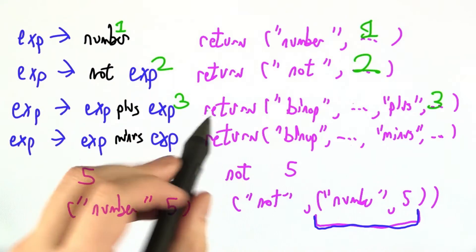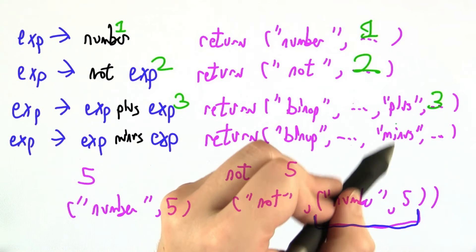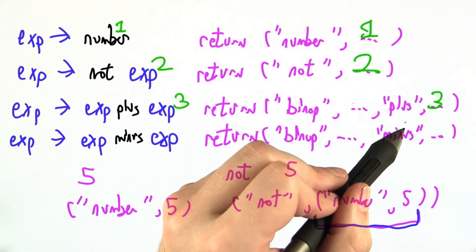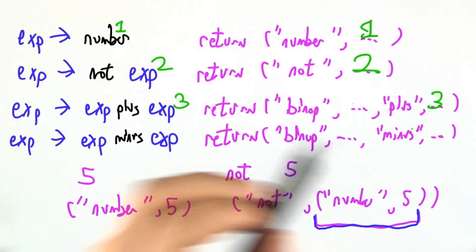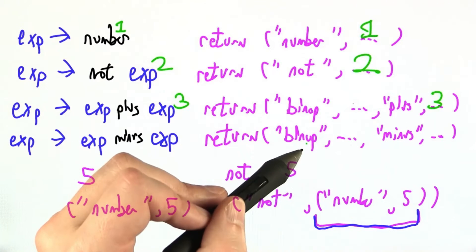That stands for binary operator, binary just meaning two things. So things like plus, minus, times, and divide, those are arithmetic operations that take two arguments, one on the left and one on the right. We call those binary operators as a class just to save space.